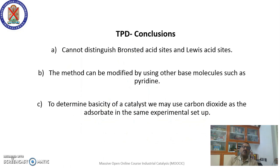From additional analysis covered in the notes, one can determine the desorption activation energy for further conclusions. However, ammonia TPD cannot distinguish between Brønsted acid sites and Lewis acid sites; any solid acid has both types but this technique cannot differentiate them. This method can be modified by using other base molecules such as pyridine. To determine the basicity of a catalyst, carbon dioxide — an acidic molecule — can be used as the adsorbate in the same experimental setup.